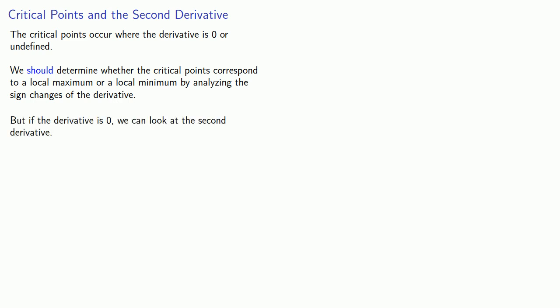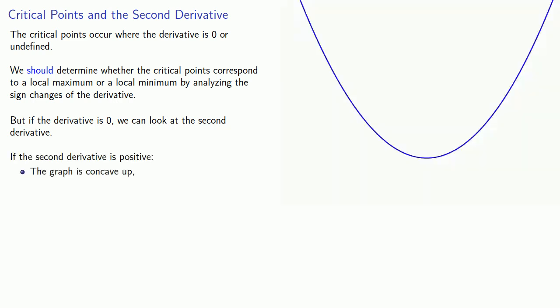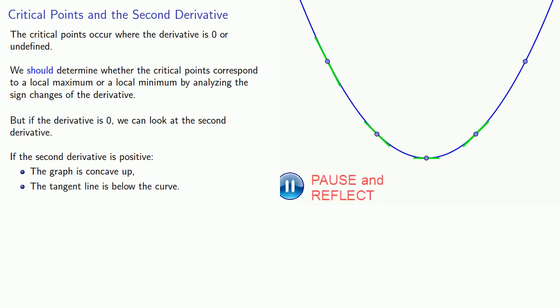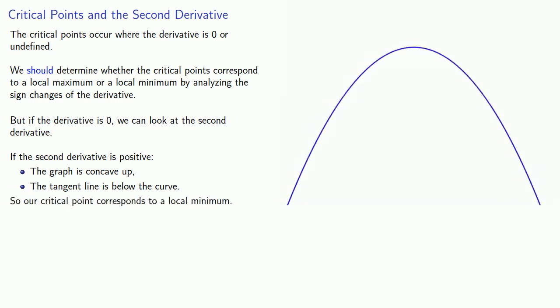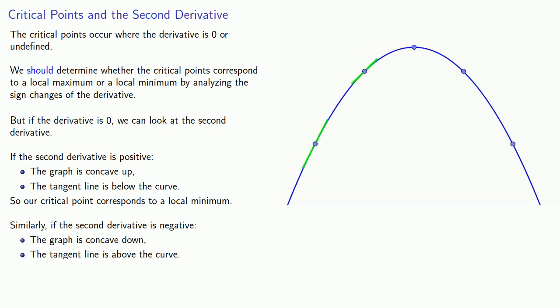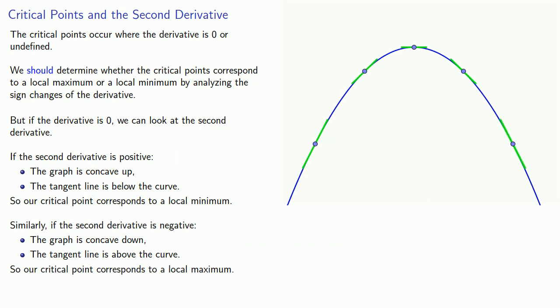But if the derivative is actually zero as opposed to undefined, we can look at the second derivative. If the second derivative is positive, then we know the graph is concave up, so the tangent line is below the curve, and that means our critical point is going to correspond to a local minimum value. Similarly, if the second derivative is negative, then the graph is concave down and the tangent line is above the curve, so the critical point will correspond to a local maximum.